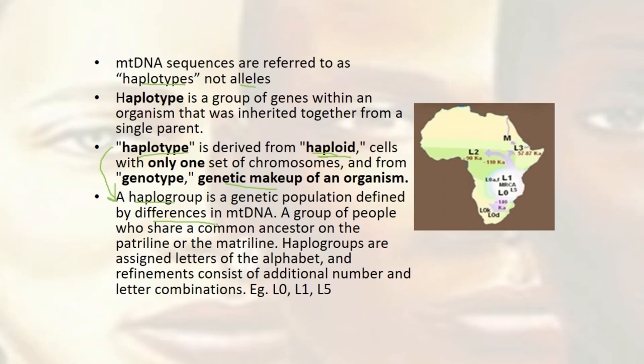This is where the theory came from — a certain group of people share a common ancestor on the matriline. We give them certain alphabets and refine them with additional numbers or letter combinations. For mitochondrial Eve's haplogroup L, you can see L0, L1, L5, and so on as indicated on this diagram. From this theory, we began there, then people migrated, different races were formed, and so on.